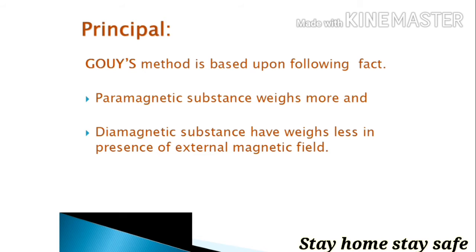Diamagnetic substances are the substances which are repelled by the magnets and they move from high magnetic field to low magnetic field. So on the basis of this,